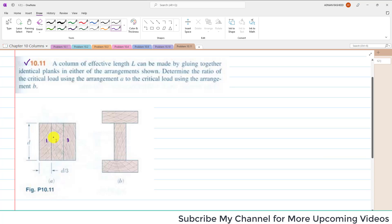They are glued together having effective length L. Similarly, arrangement B is also made up of three planks - same planks 1, 2, 3. Its height is D and its width is D/3.